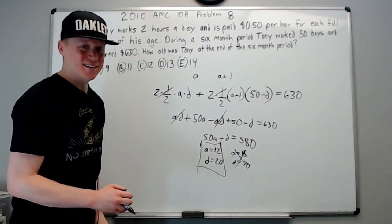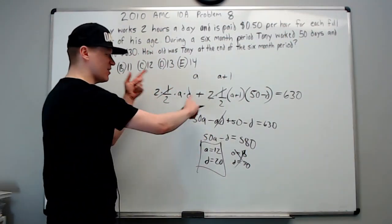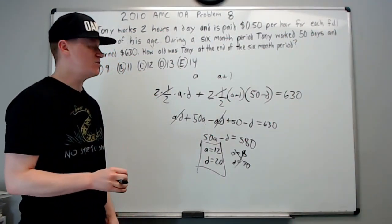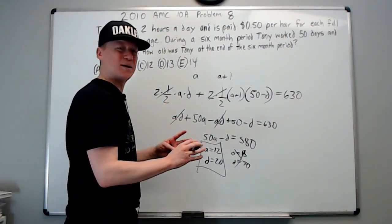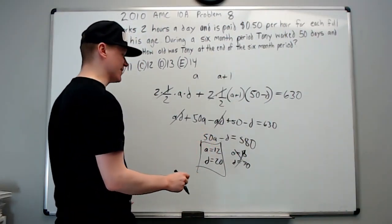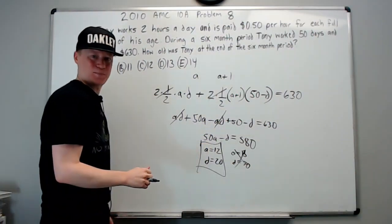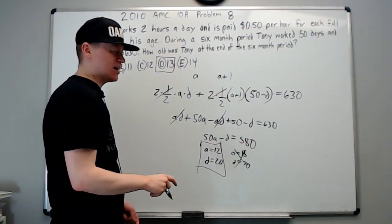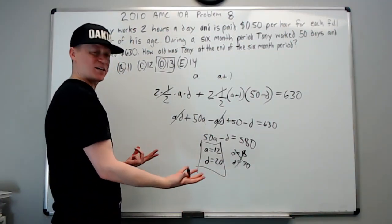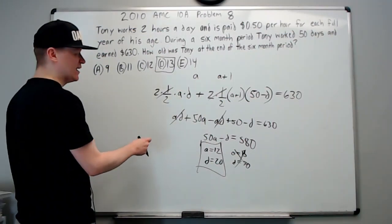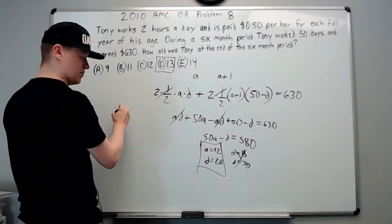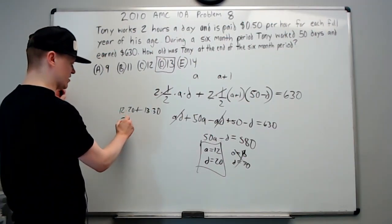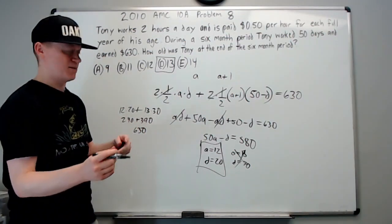Now be careful, they're starting to try to trick you. If you solve this and go 'oh I got the answer, a is 12,' you put 12 and you get it wrong. It happened to several students that year. Don't do that. Think a little bit, slow down, and make sure it makes sense. It asks for at the end of the six month period. This is his age at the beginning, this is his age at the end, and we get 13. One last thing: if you move through it swiftly, you should have time to check your answer. He was 12 years old for 20 days, then 13 for 30 days. 12 times 20 is 240 plus 390 is 630. It checks out.